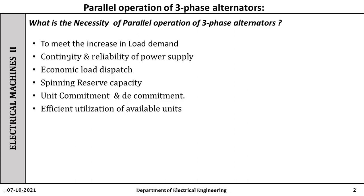Another factor is that in order to get continuous and reliable power supply, there would be an economic dispatch, because the alternators which have higher efficiencies can be run as base load. During the peak load hours, alternators having lower efficiency can be committed — meaning connected to the system. This also increases the spinning reserve capacity. It is a unit commitment and decommitment, enabling efficient utilization of units in the generating stations.